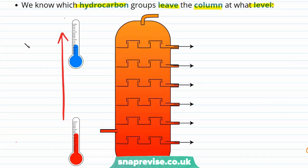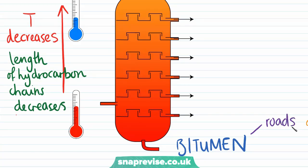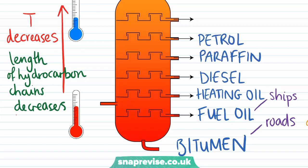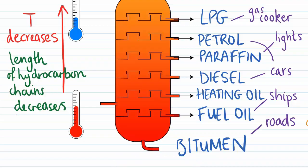The temperature of the fractioning column decreases from bottom to top, and the length of the hydrocarbon chain of each fraction also decreases moving upward. The fraction that condenses first, with the highest boiling point and longest hydrocarbon chain, is called bitumen — a sticky liquid used to cover roads and roofs. The next fraction, with a slightly lower boiling point, is fuel oil, used in large power stations or ships. Then comes heating oil, followed by diesel, paraffin, and petrol — all fuels, with petrol and diesel used in cars and paraffin used in lights. The final fraction is LPG, or liquefied petroleum gases, which has the lowest boiling point and contains the shortest chain alkanes including propane and butane. LPG is the gas you might use in a gas cooker. All of these useful fractions have been separated from the crude oil mixture based on their different boiling points.